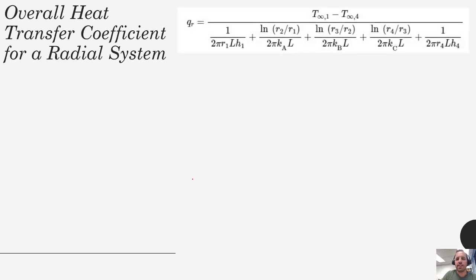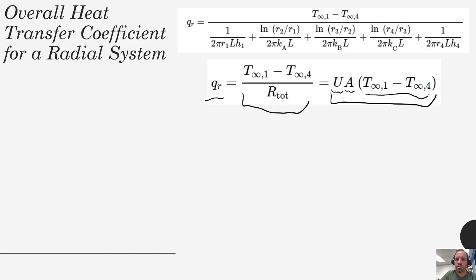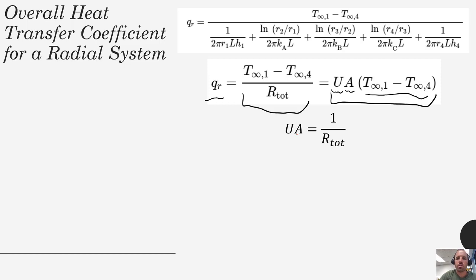The concept of the overall heat transfer coefficient U also applies to radial systems. We can take the rate equation with R_total in the denominator and equate it to a form resembling Newton's law of cooling: q = U times A times delta T, where U is the overall heat transfer coefficient. The relationship between R_total and UA is simply that UA equals the inverse of R_total. This U is analogous to h for pure convection, but has all conductive and convective information embedded within it — very useful for designing and evaluating heat exchangers.